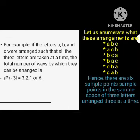I have an example here. If the letters A, B, and C are arranged such that all 3 letters are taken at a time, the total number of ways they can be arranged is: 3P3 equals 3 factorial. We know that 3 factorial equals 6 because 3 times 2 times 1. 3 times 2 equals 6, and 6 times 1 equals 6.